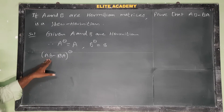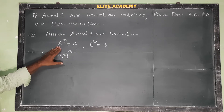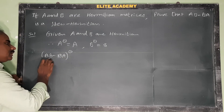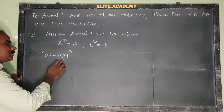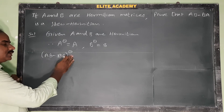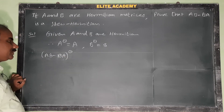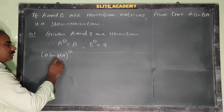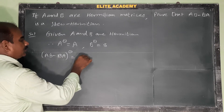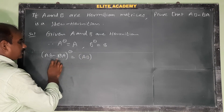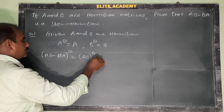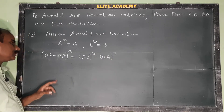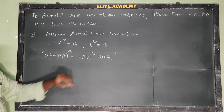The skew-Hermitian definition: if A is skew-Hermitian then A† = -A. So we take (AB - BA)† and split it up using properties of the Hermitian matrix: (AB - BA)† = (AB)† minus (BA)†.